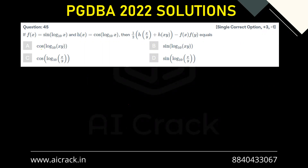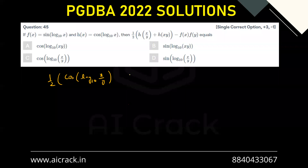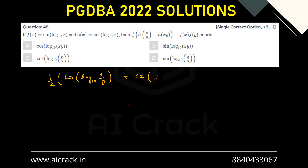Let's solve question number 45. If f(x) equals sine of log₁₀x and h(x) equals cosine of log₁₀x, then we need to simplify a complicated expression. Let's write it out: we have (1/2) times h(x/y), which equals cos(log₁₀(x/y)), plus h(xy), which equals cos(log₁₀(xy)).